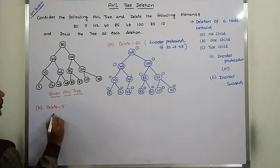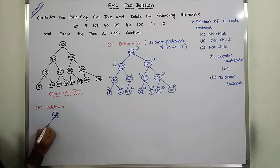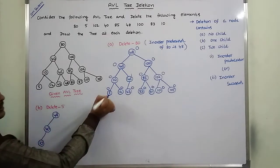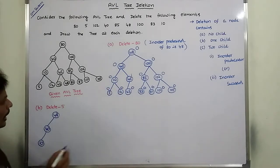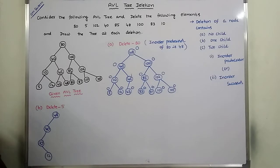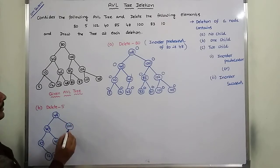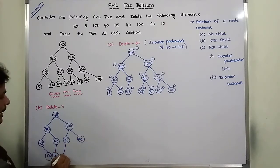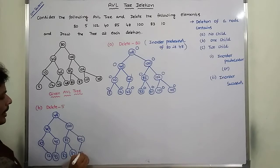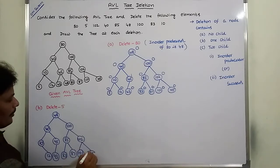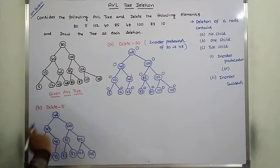After deleting node 5, the tree structure is as follows: 48 is the root. Left child is 40, and under 40, left child is 10. Node 10 now has only its right subtree with value 12 (node 5 is deleted). Node 40's right child is 45, and 45's left child is 43. Node 48's right child is 100. Node 100's left child is 85, right child is 102. Node 85's left child is 83, right child is 87. Node 102's left child is 101, right child is 105. This is the tree after deleting node 5.